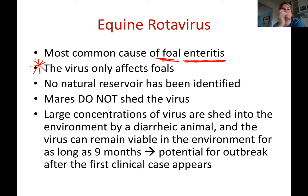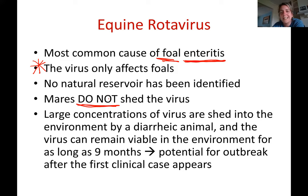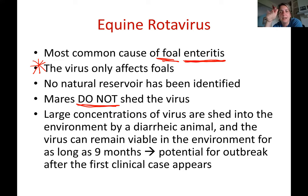Some farms have rotavirus more often than others, but no natural reservoir has been identified. Mares do not shed the virus, so they are not passing the disease to their foals. Mares can pass other GI tract diseases such as E. coli or salmonella to foals — for example, if the mare has diarrhea and the udder gets contaminated and the foal drinks that milk — but with rotavirus specifically, mares do not shed the virus.